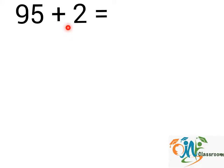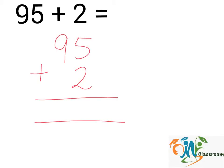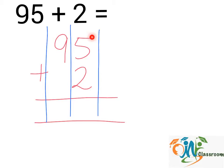95 plus 2. We will write down the question this way. Now we will divide the numbers into columns — column 1 and 2. Next, we will add up the numbers in each column from right to left.